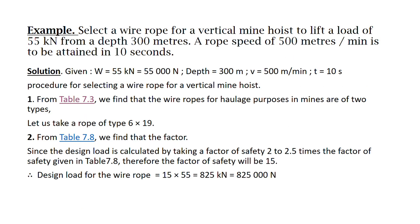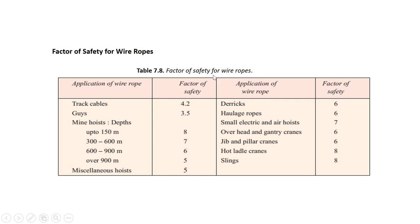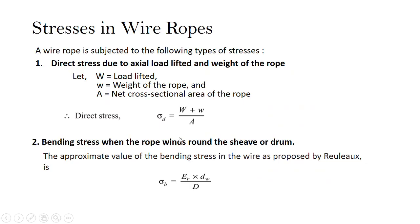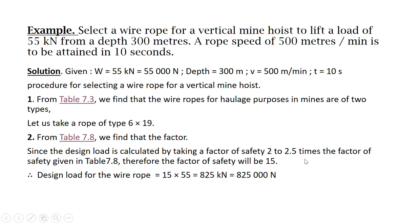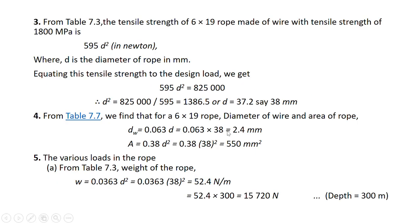Now we will select the factor of safety from table 7.8. The factor of safety for mine hoist is given as 8 to 7 to 6 depending upon the depth. Our depth is 300 meters, so the factor of safety is 7. We will multiply this factor of safety 2 to 2.5 times: multiplying by 2 gives 14, by 2.5 gives 17.5, so we take 15. The design load is calculated by multiplying 15 by the weight 55 kilo Newton, giving a design load of 825 kilo Newton.